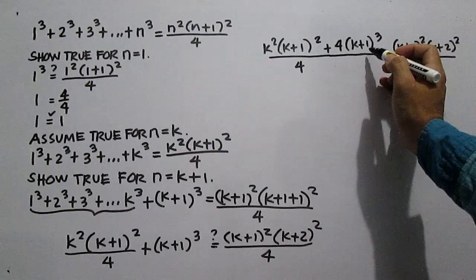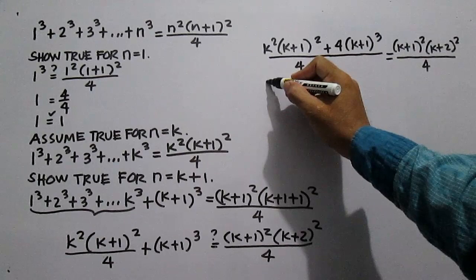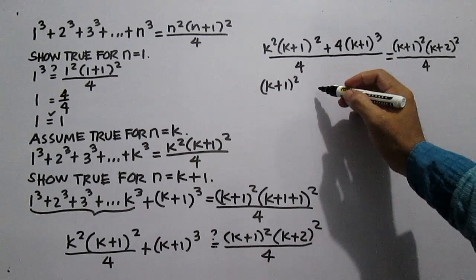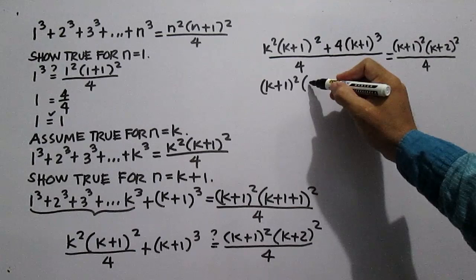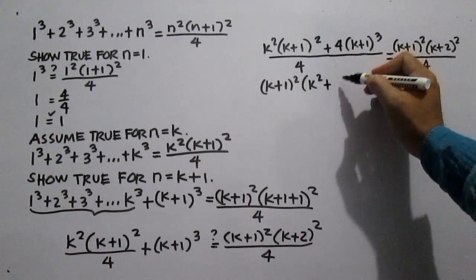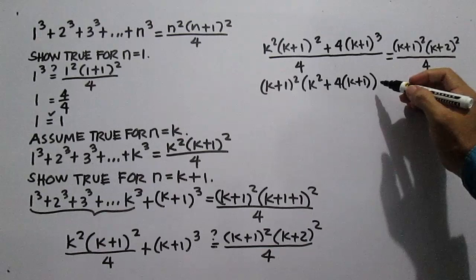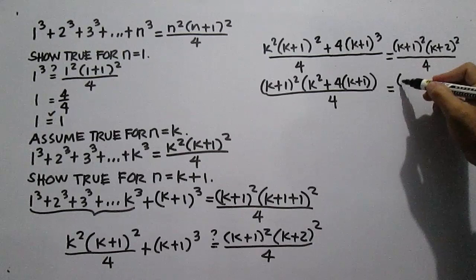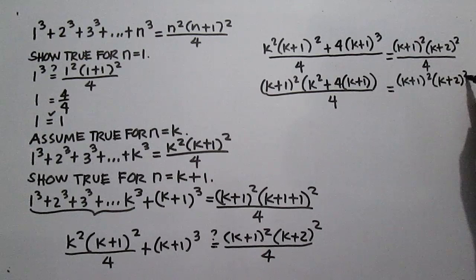Adding with common denominator 4: k squared times the quantity k plus 1 plus 4 times the cube of the quantity k plus 1, all over 4. The square of k plus 1 is common — factor out the square of k plus 1. The other factor is k squared plus 4 times the quantity k plus 1, all over 4. This equals the square of the quantity k plus 1 times the square of the quantity k plus 2, all over 4.